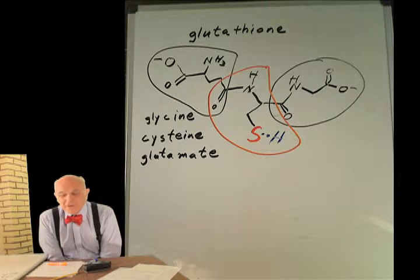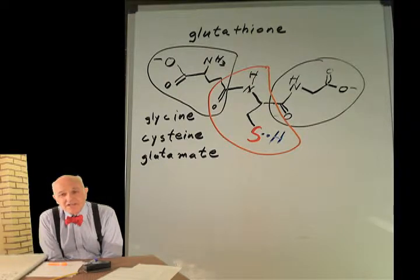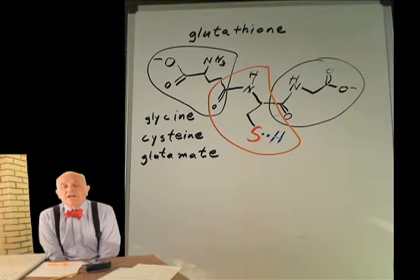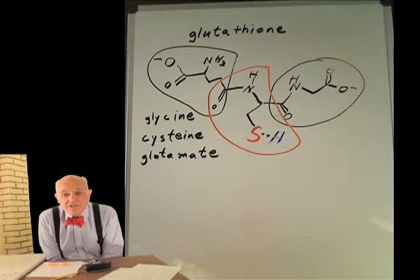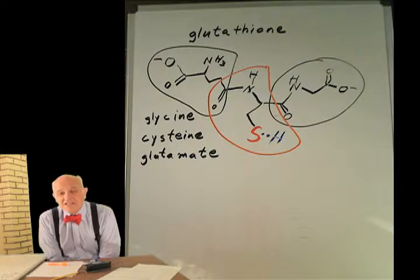So glutathione. Glutathione is an antioxidant like other antioxidants. Glutathione consists of a glycine amino acid, a glutamate amino acid, and a cysteine amino acid.